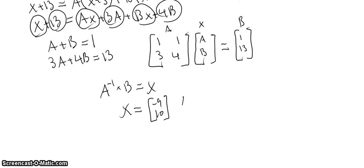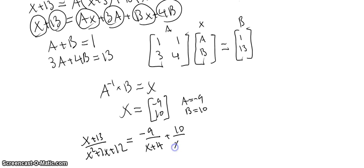And so now we know A equals negative 9 and B equals 10. And so we get x plus 13 over x squared plus 7x plus 12 is equal to negative 9 over x plus 4 plus 10 over x plus 3.